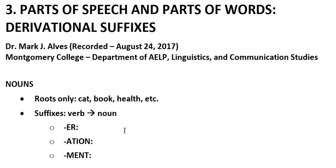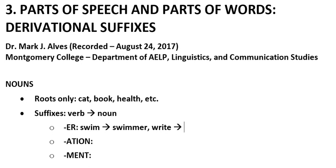One suffix that makes nouns is -er, and it usually makes a verb into a noun, such as swim to swimmer and write to writer. I'm sure you can think of many more such words that derive a noun from a verb.